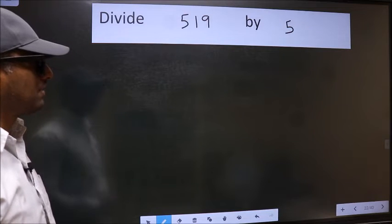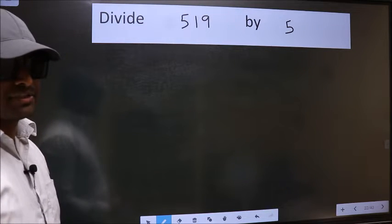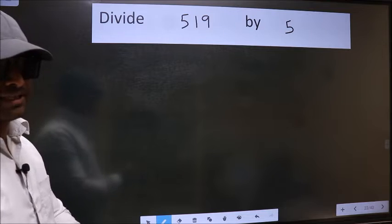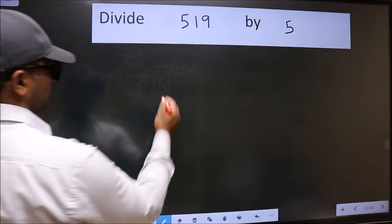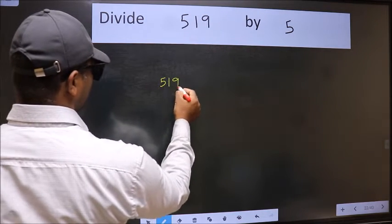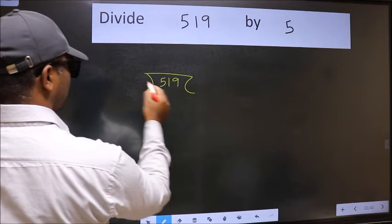Divide 519 by 5. To do this division, we should frame it in this way: 519 here and 5 here.